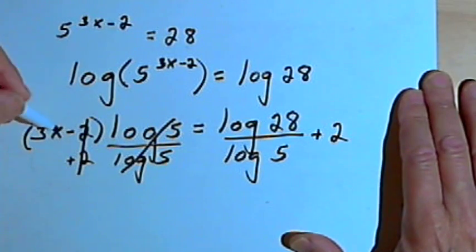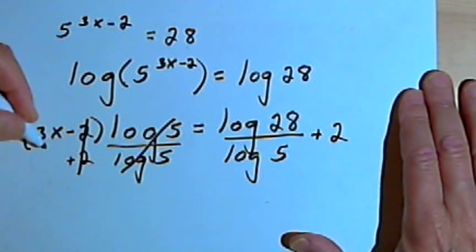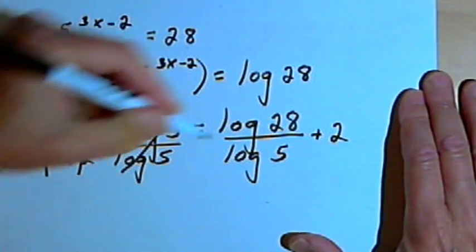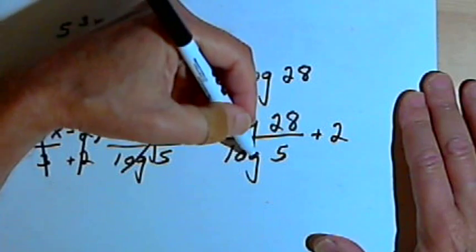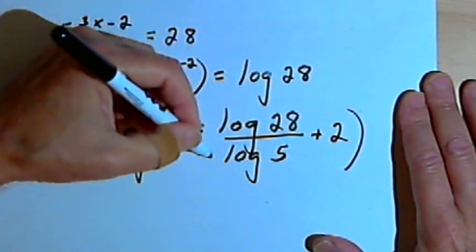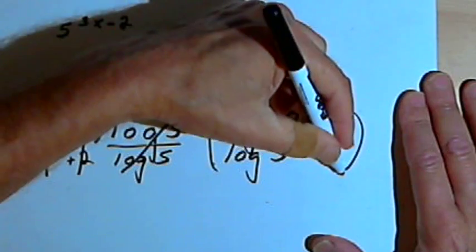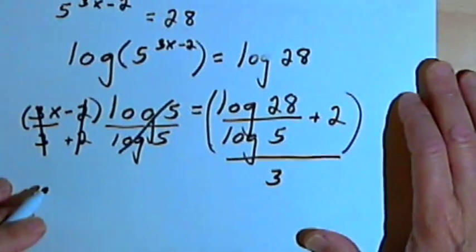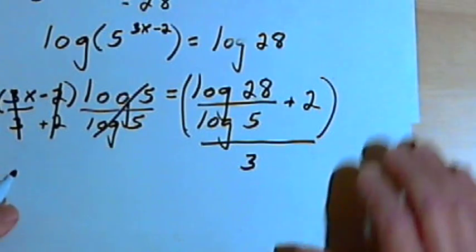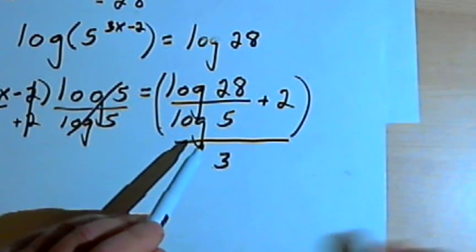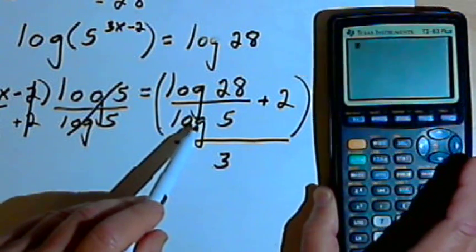Now since I've got 3x, I want to divide both sides by 3. So I'm going to have x equals the log of 28 over the log of 5 plus 2, that whole expression, divided by 3. Now I know this seems complicated, but this expression is really going to be fairly easy to solve — we'll just use a calculator.